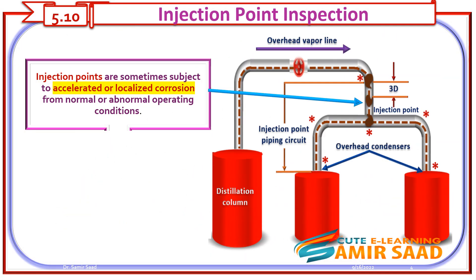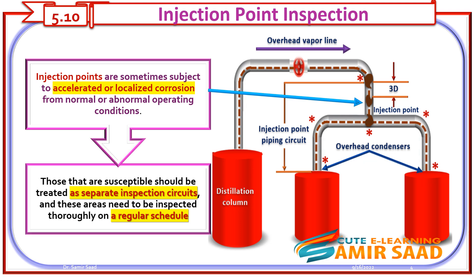Injection points are sometimes subject to accelerated or localized corrosion from normal or abnormal operating conditions. Those that are susceptible should be treated as separate inspection circuits, and these areas need to be inspected thoroughly on a regular schedule.